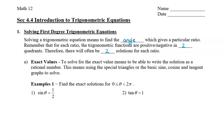When I ask you to solve for the exact value, that means to be able to write the solution as a rational number. So this means that you're going to use the special triangles, or the basic sine, cosine, and tangent graphs to solve. To help us, I'm going to draw our two special triangles over here on the side. One of them is our pi over 6, pi over 3 triangle, which gives us root 3 on the bottom, 1 and 2. And then the other triangle is our pi over 4, pi over 4 triangle, which has the ratios 1, 1, and root 2. We're going to use these triangles and refer to them when we're solving.